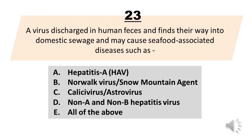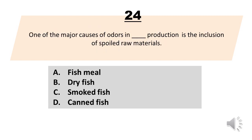A virus discharged in human feces finds its way into domestic sewage and may cause seafood-associated diseases such as: A. Hepatitis A, HIV. B. Norwalk virus / Snow Mountain agent. C. Glycogen virus / Astrovirus. D. Non-A and non-B hepatitis virus. E. All of the above. The correct answer is Letter E, All of the above.